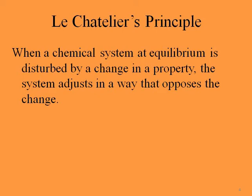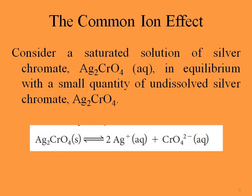For example, when we are at equilibrium, if you increase the concentration of one of the reactants, the reaction will shift to the right — toward the product side. On the other hand, if we increase the concentration of one of the products, the equilibrium shifts to the left — toward the reactant side — to oppose the change and make a new equilibrium. Now let's see what the common ion effect is.